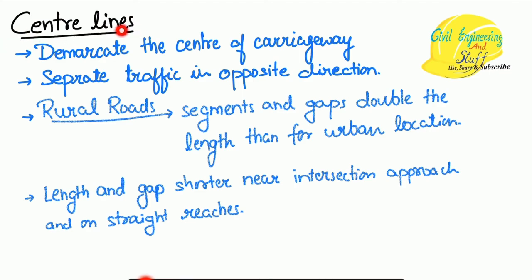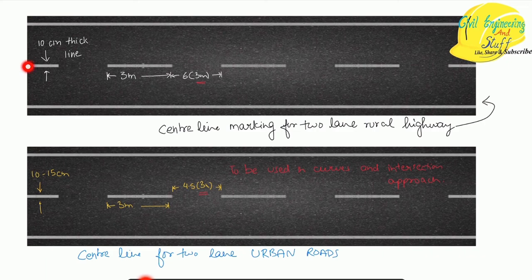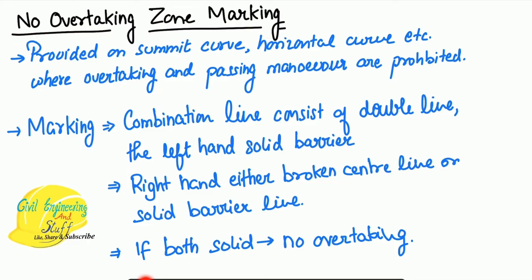Center lines are used to denote the center of the carriageway and bifurcate opposite-direction traffic movement. For rural roads, the segment and gap of broken lines doubles the length compared to urban locations, and the length and gap shorten as we approach an intersection. The broken center line is 10 centimeters thick with a length of 3 meters, and the gap may vary from 3 to 6 meters.